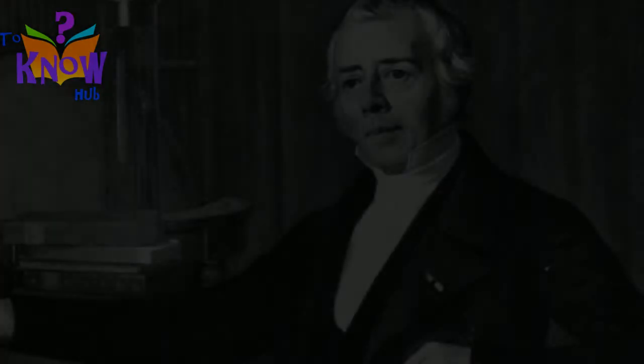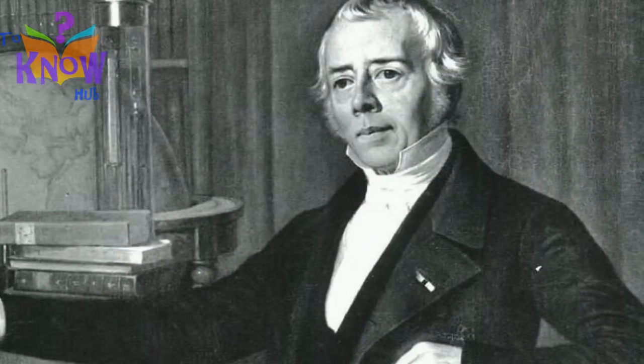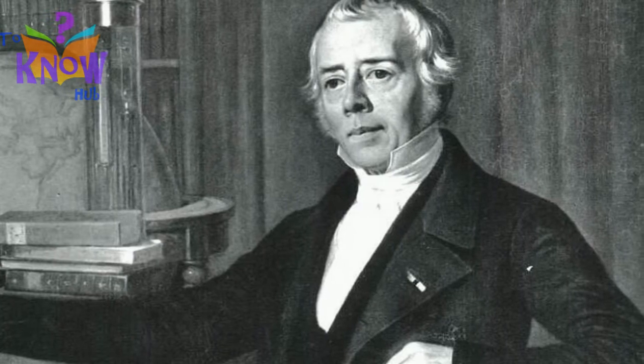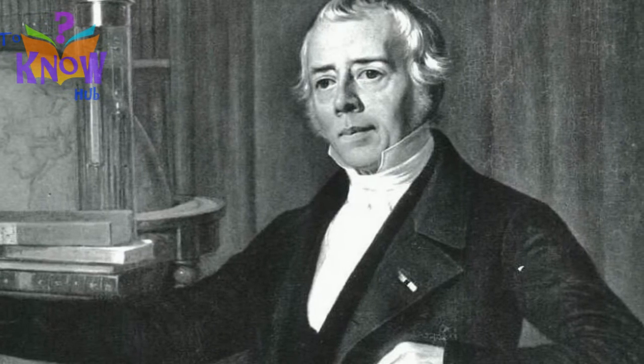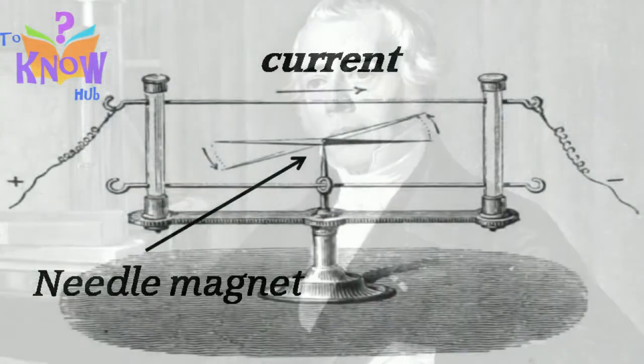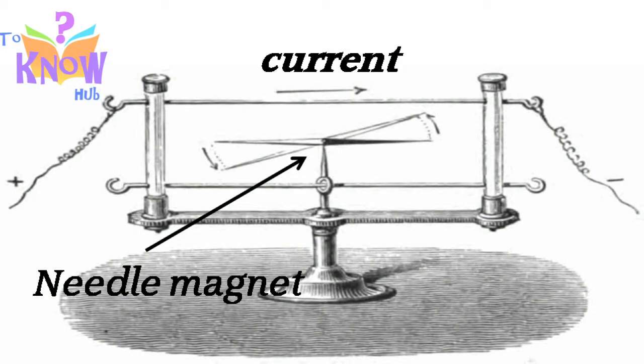Hans Christian Orsted accidentally put a compass near a wire carrying electricity and found that the compass needle got deflected. Thus, he discovered electromagnetism, that is, the discovery that electricity flow creates magnetic field.